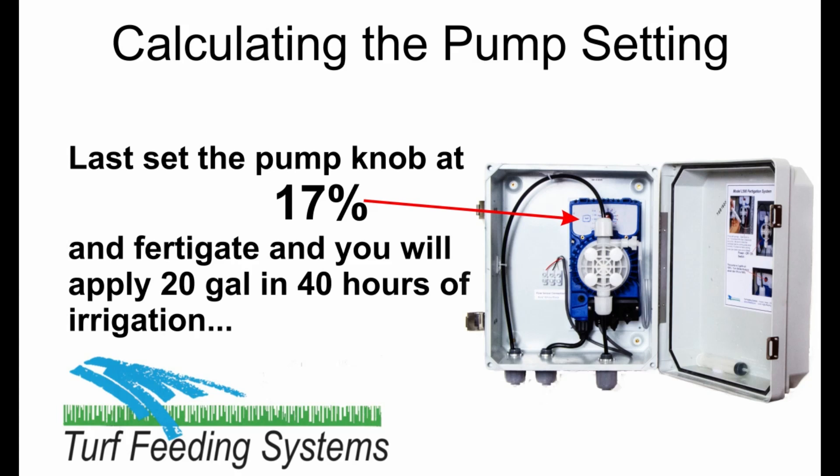Last step: set the pump setting knob at 17% and you are ready to fertigate. It will inject 20 gallons of fertilizer over the next 40 hours of irrigation.